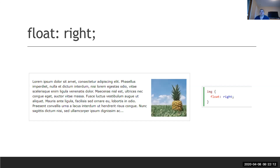With float set to right, the image is pushed to the right side of the screen and the text can all float up next to it. What's important to note about the float property is that it doesn't just affect the object you're floating — it affects everything around it. It allows things to float to the left, right, on top of, and below it.